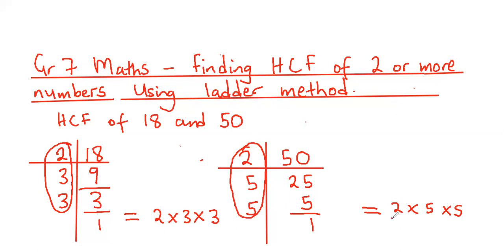We can see that 2 is in both. We have 5 here and 3 there. These are not common. So the highest common factor of 18 and 50 is equal to 2.